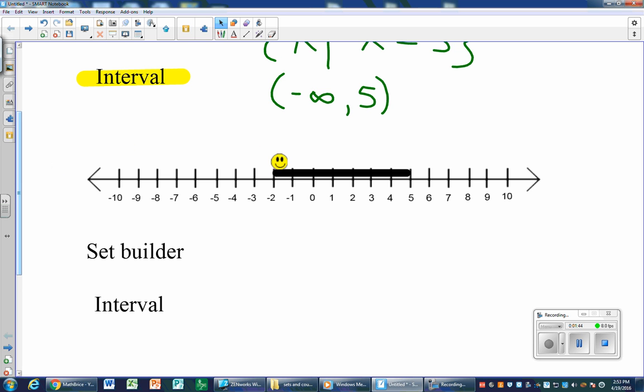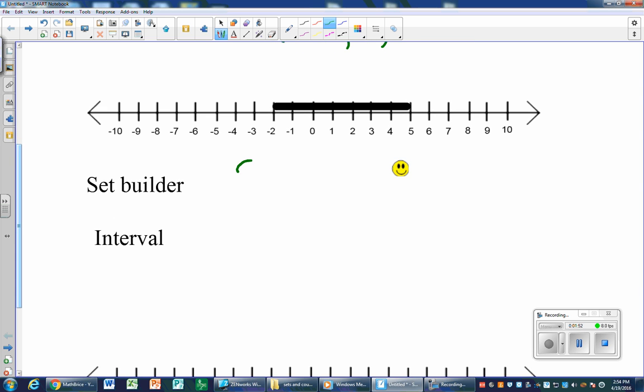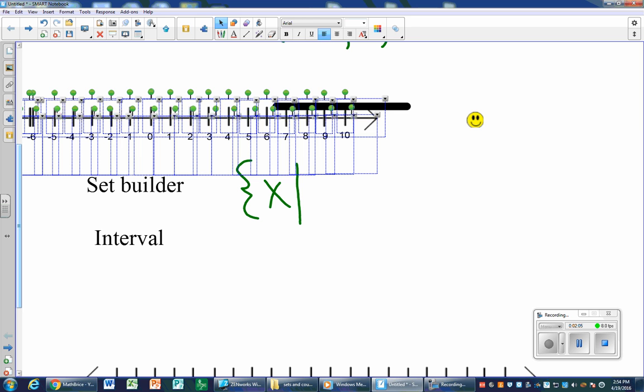Well, what happens if you want to have a specific set of numbers - a finite set of numbers? Set builder notation, we start with the brace, all numbers x such that - now we're not going infinitely to the left or right, so we are in between.